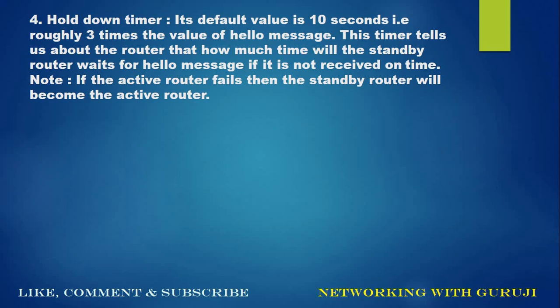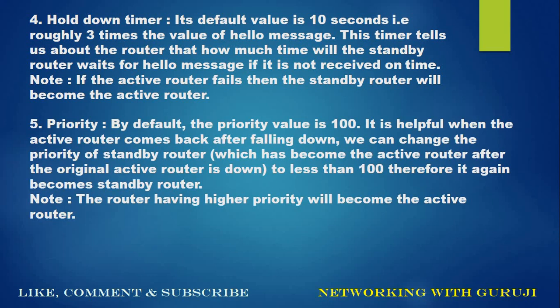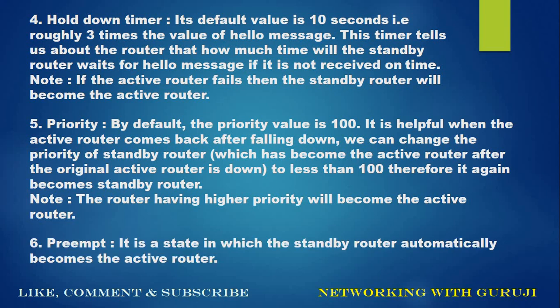If the active router fails, the standby router will become the active router. Fifth, Priority: by default the priority value is 100. It is helpful when the active router comes back after failing. We can change the priority of the standby router, which became active, to less than 100, so it again becomes the standby router. The router with higher priority becomes the active router. Sixth, Preempt: a state in which the standby router automatically becomes the active router.